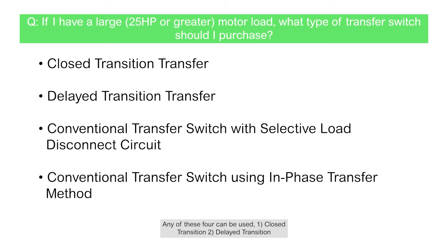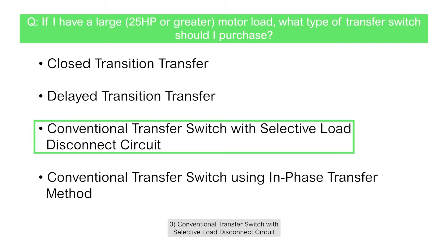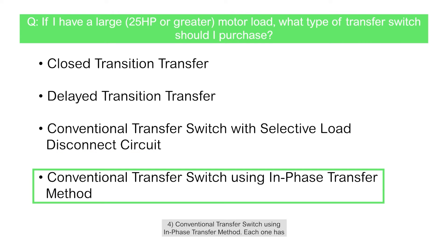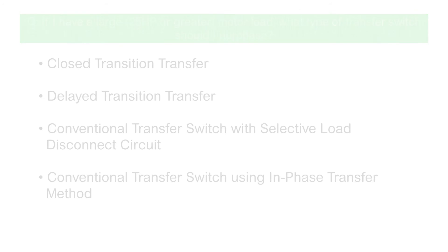Any of these four can be used: 1. Close transition. 2. Delayed transition. 3. Conventional transfer switch with selective load disconnect circuit. 4. Conventional transfer switch using in-phase transfer method. Each one has its strengths and weaknesses.